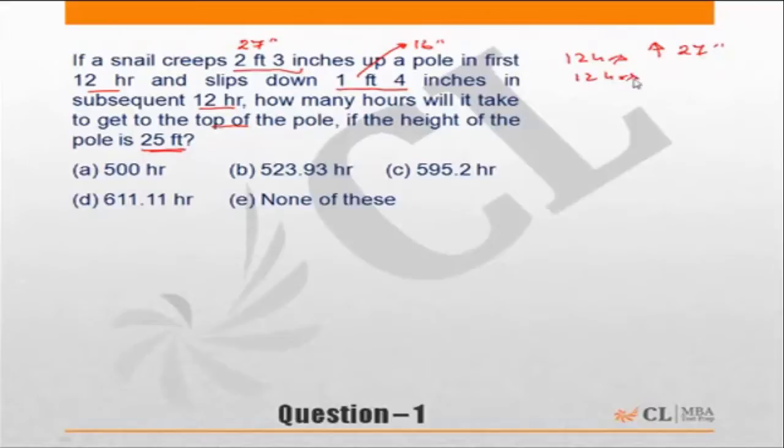I can say in every block of 24 hours, it goes up by 11 inches. Now, a common mistake which is committed in this question is, after doing this, we say that the height of the pole is 25 feet or 300 inches.